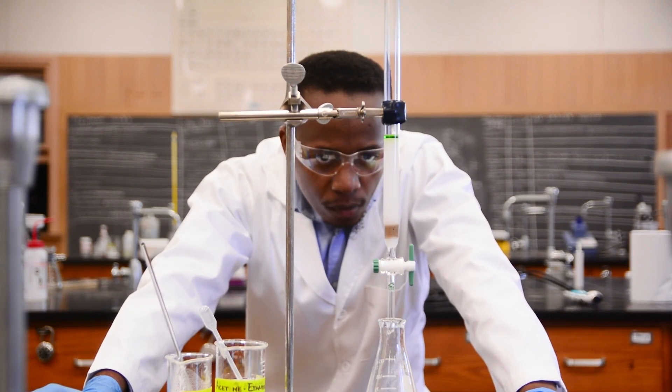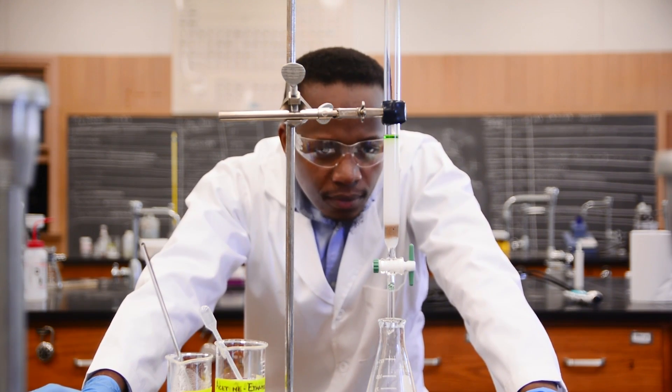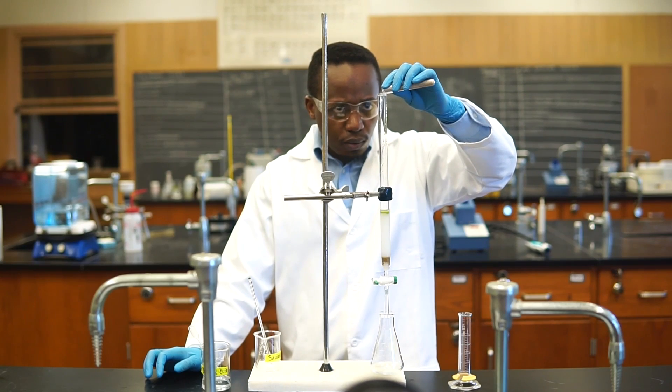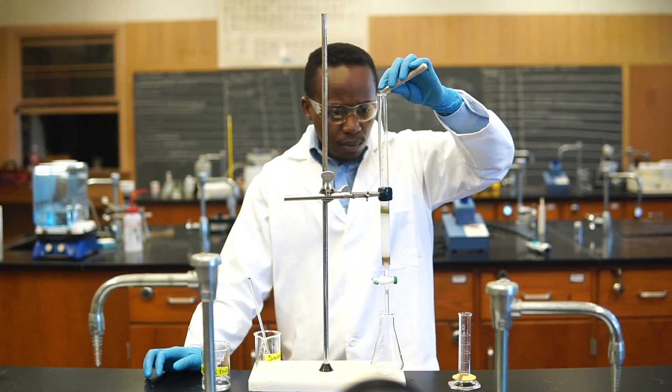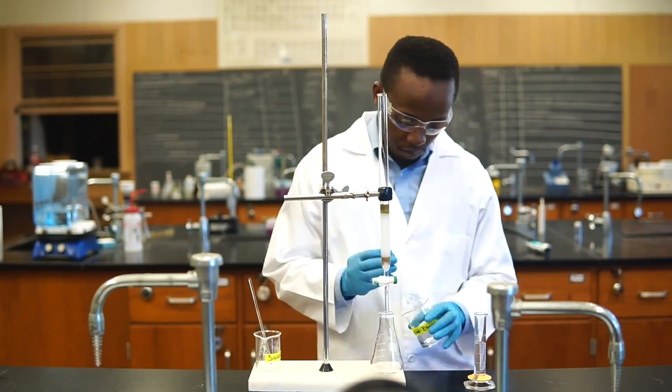After loading the sample and verifying that all of it has been adsorbed onto the column, we can add another layer of sand as a protective layer. Let's add about a centimeter. We can now fill up the column with our eluent.